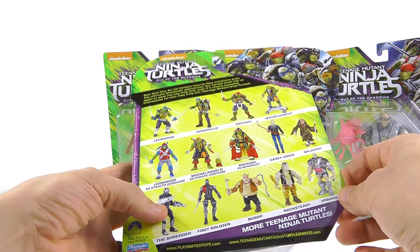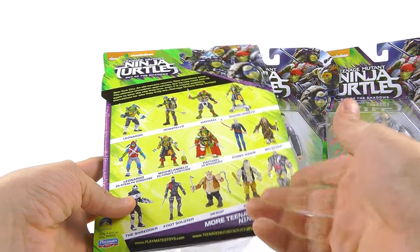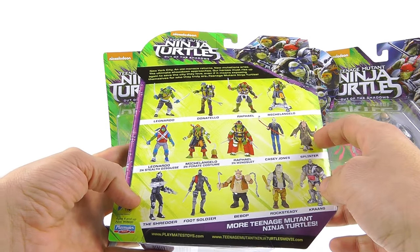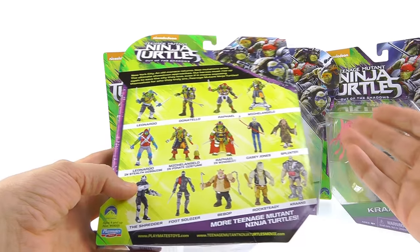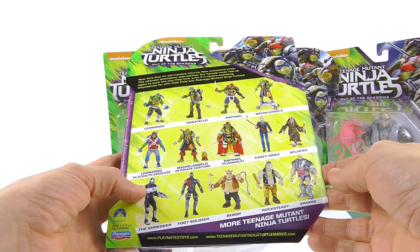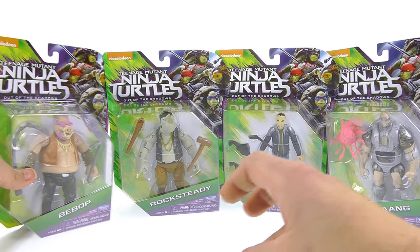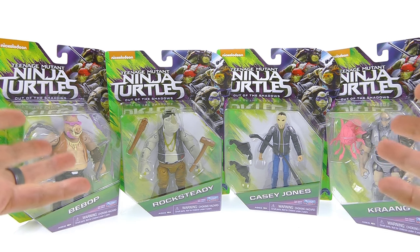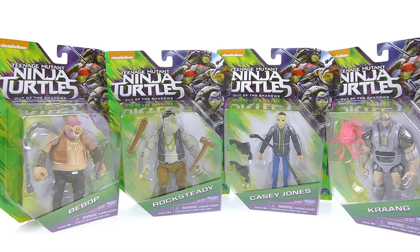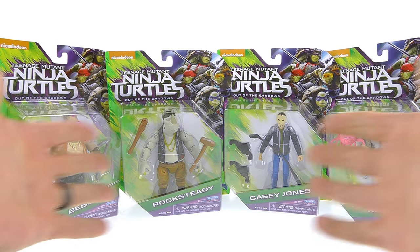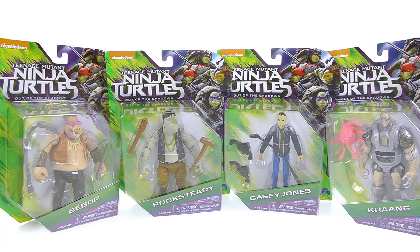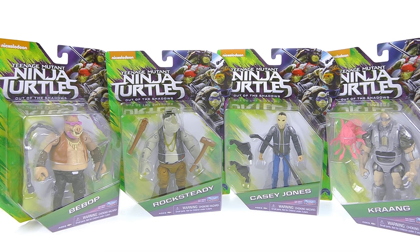You got Casey Jones, Splinter, the Shredder, Foot Soldier, Bebop, Rocksteady, and of course Krang. We're going to take a look at Shredder and Splinter in a different video because they're characters we've already gotten. But these guys are all brand new, so I thought I'd throw them all in one video. The packaging is all the same here. So without further ado, let's get these guys open and see how cool they actually are.